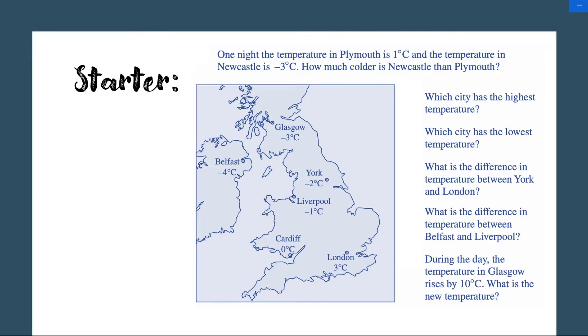I'm going to quickly show you what to do here. It says one night the temperature in Plymouth is 1°C and the temperature in Newcastle is -3°C. How much colder is Newcastle than Plymouth? If you imagine a number line and you go from 1, you go down, how many degrees do you go down to get to -3? That would be about 4. You would go 1 minus 1 minus 2 minus 3 minus 4, so you went down 4. There's 4 degrees difference.